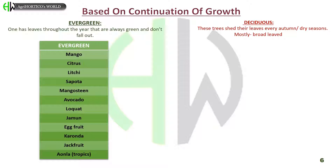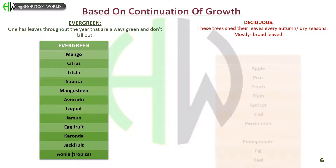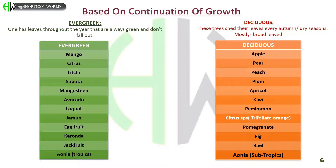Deciduous trees shed their leaves every autumn or in dry seasons and are mostly broad-leaved. Examples are apple, pear, peach, plum, apricot, kiwi, persimmon, trifoliate orange in citrus species, pomegranate, fig, bael, and amla in subtropical conditions.